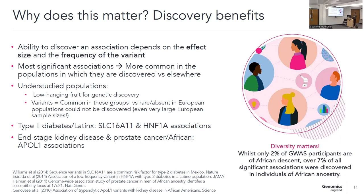From a benefits perspective, if you know lots about genetics this is fairly obvious: the main thing we're interested in is discoverability. The ability to discover new associations depends on both effect size and the frequency of variants. There is a huge benefit in understudied populations — if some variants are common in some groups but rare in others, there's an on-tap resource of new associations we didn't even know existed. Individuals of African ancestry punch well above their weight: whilst only 2% of GWAS studies include individuals of African ancestry, they contribute about 7% of positive and significant associations.